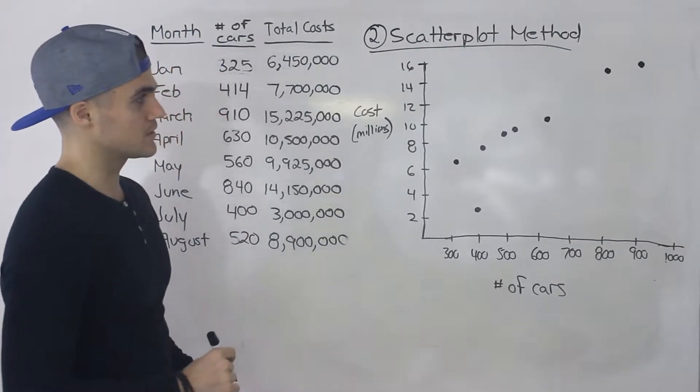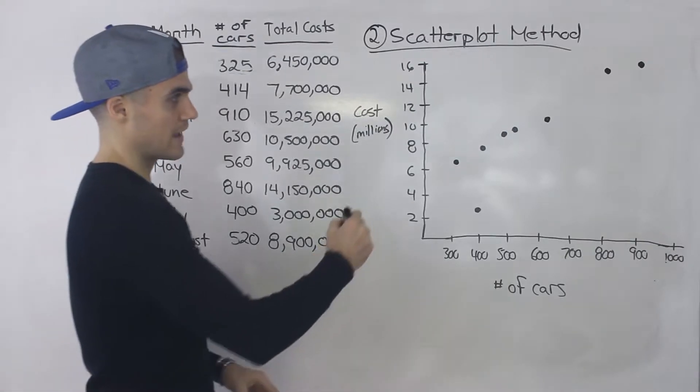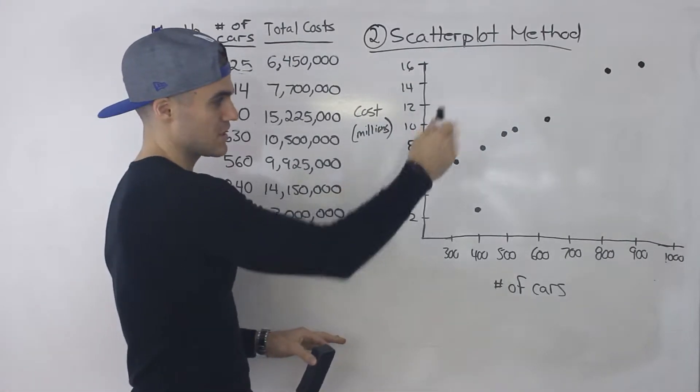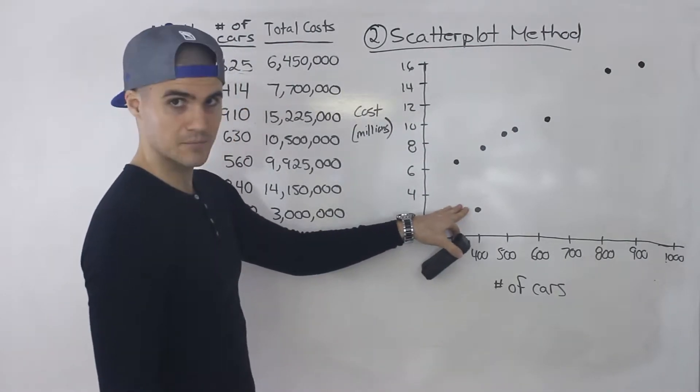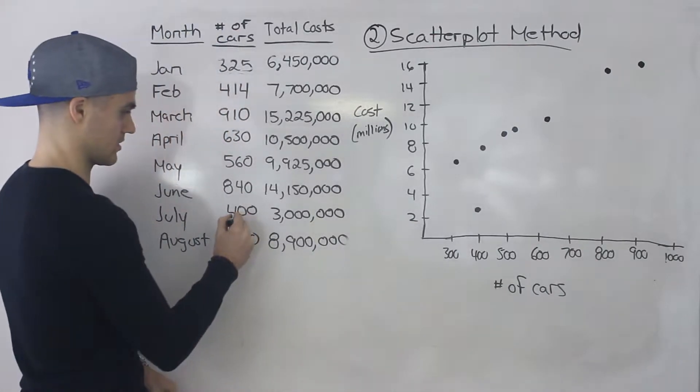And so what you want to do here is you want to draw a line basically that goes through most of the data here. Now notice that this point here, this is some kind of outlier, right? This point is here.